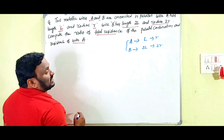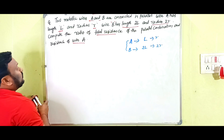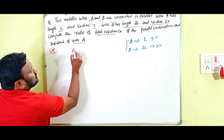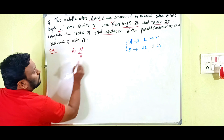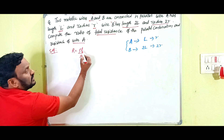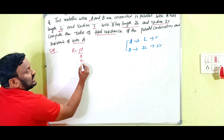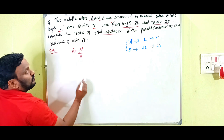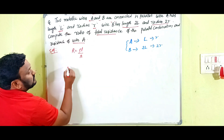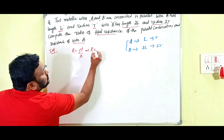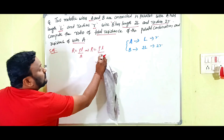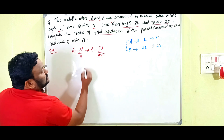These two wires are connected in parallel. We know that resistance R equals rho times L divided by A, where R is resistance, rho is resistivity, L is the length, and A is the area of cross section. Since radius is given instead of area, we write A as pi R squared.